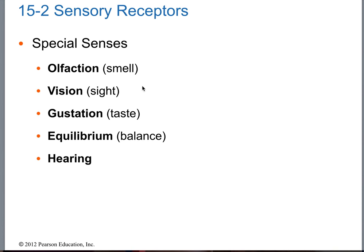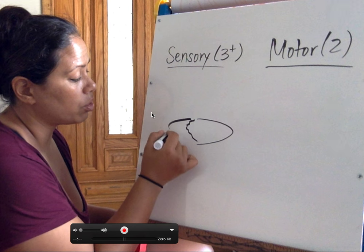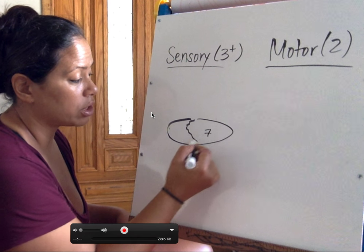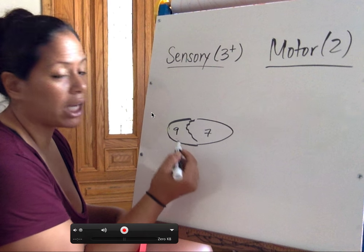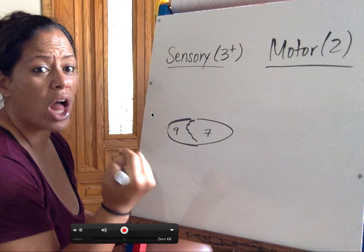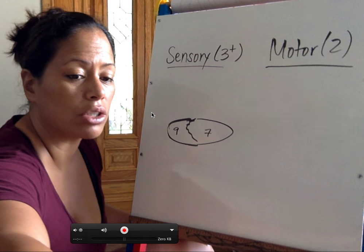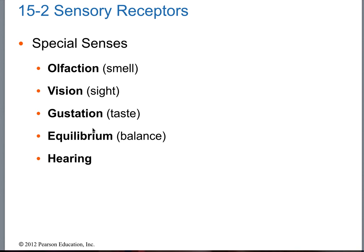Sensation, perception, special senses we'll cover a little bit later. If you notice, these are all cranial nerves. Cranial nerve one is olfaction, cranial nerve two is vision. Gustation is actually two nerves — the anterior two-thirds of the tongue is controlled by cranial nerve seven, and the posterior one-third of the tongue is cranial nerve nine. We already know this because we did the gag reflex.